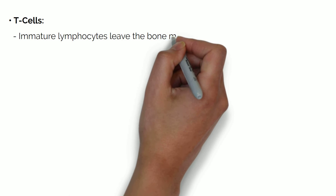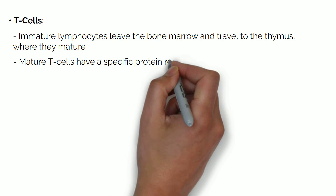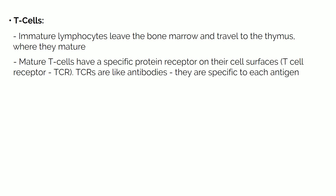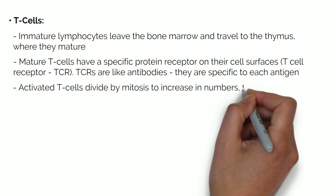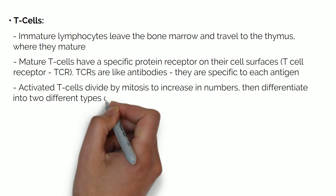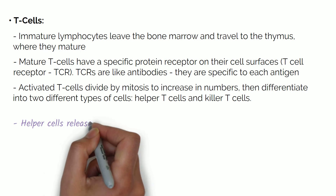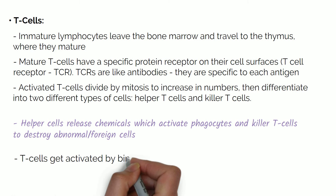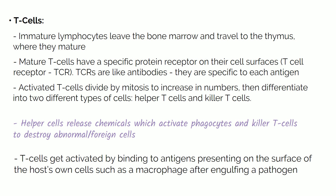T lymphocytes or T cells: immature lymphocytes leave the bone marrow and travel to the thymus where they mature. Mature T cells have a specific protein receptor on their cell surface known as the T cell receptor, which is like antibodies in that it is specific to each antigen. Activated T cells divide by mitosis to increase in numbers, then differentiate into two different types of cells: helper T cells and killer T cells. Helper cells release chemicals which activate phagocytes and T killers to destroy abnormal or foreign cells. T cells get activated by binding to antigens presented on the surface of the host's own cells, such as a macrophage after engulfing a pathogen.